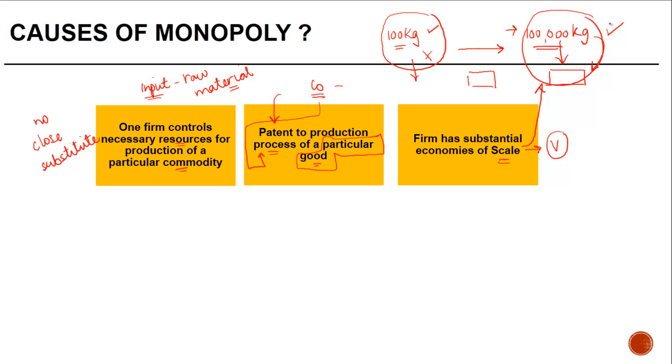The state or the government created monopoly through legal barriers. In railways, anyone cannot enter - that's a state created monopoly.